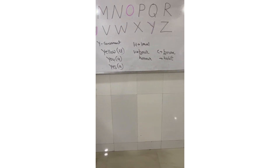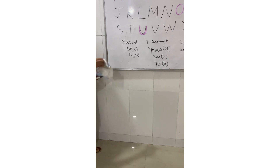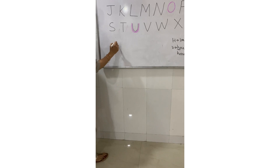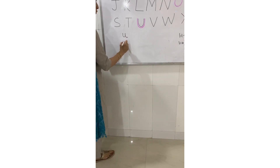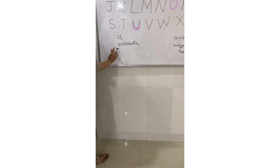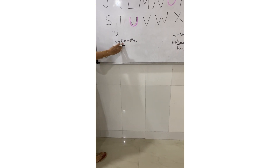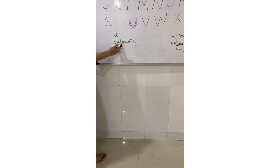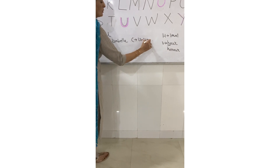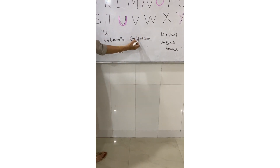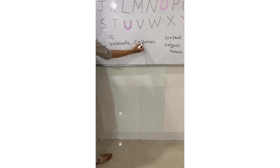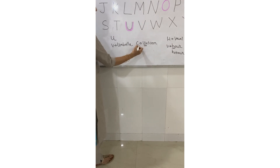Now let us see the exception about vowel U. We write 'umbrella' — the first letter is U and the sound is 'A', so it is a vowel. But if we write 'unicorn', the first letter is U but the sound is 'Y', not 'A', so here U acts as a consonant.